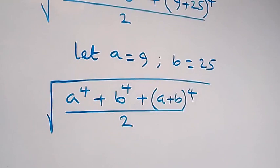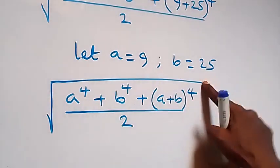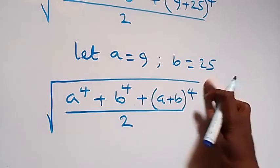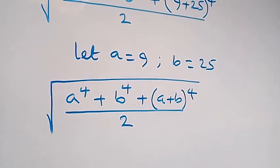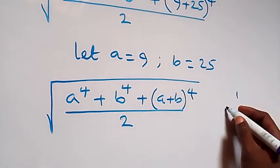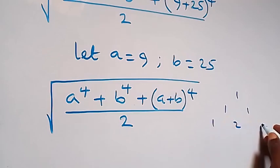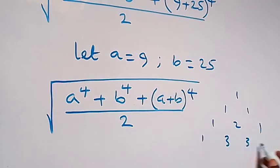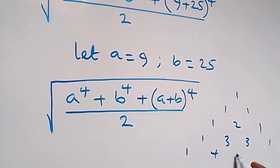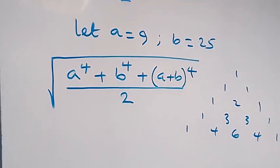From here, the expansion when we have power of 4 — using Pascal's triangle — from power of 0 to power of 1 you have 1, 1; power of 2 you have 1, 2, 1; power of 3 you have 1, 3, 3, 1; then power of 4 you have 1, 4, 6, 4, 1 as coefficients of the expansion.